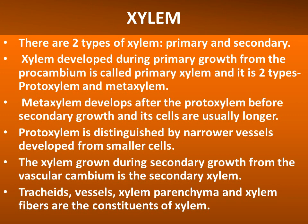Xylem developed during primary growth from the procambium is called primary xylem, and it is of two types: protoxylem and metaxylem. Metaxylem develops after the protoxylem before secondary growth, and its cells are usually longer. Protoxylem is distinguished by narrower vessels developed from smaller cells. The xylem grown during secondary growth from the vascular cambium is the secondary xylem.